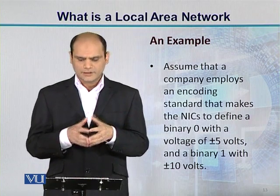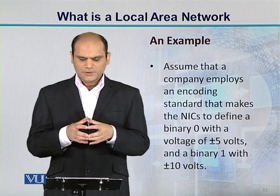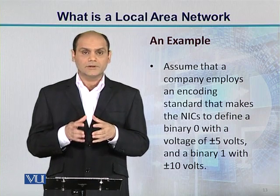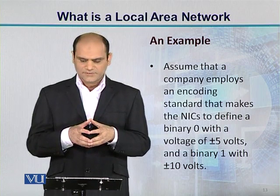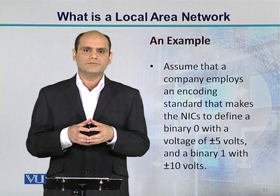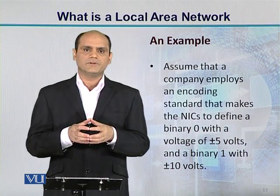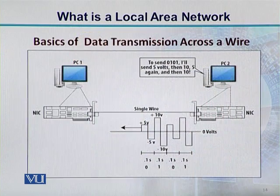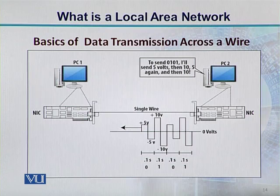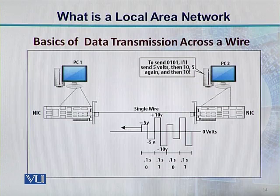Let's take an example to understand encoding. We assume a company employs an encoding standard that makes the NICs define a binary 0 with a voltage of plus or minus 5 volts, and a binary 1 with plus or minus 10 volts. Looking at the diagram, we have two PCs: PC1 and PC2. PC2 wants to send the binary value 0, 1, 0, 1 — which is the original file, represented as a combination of 0s and 1s.